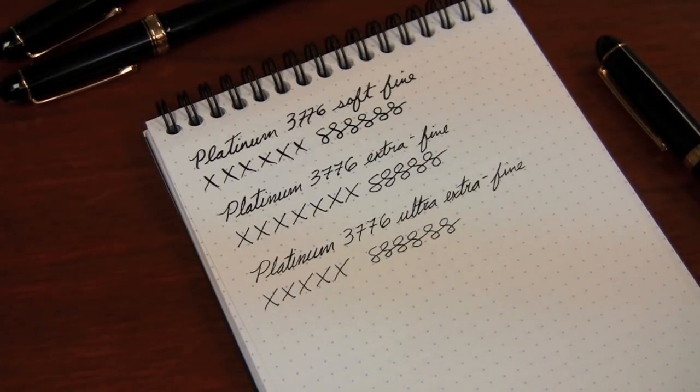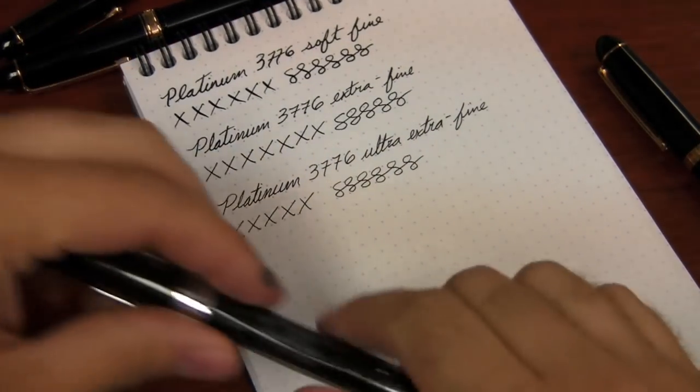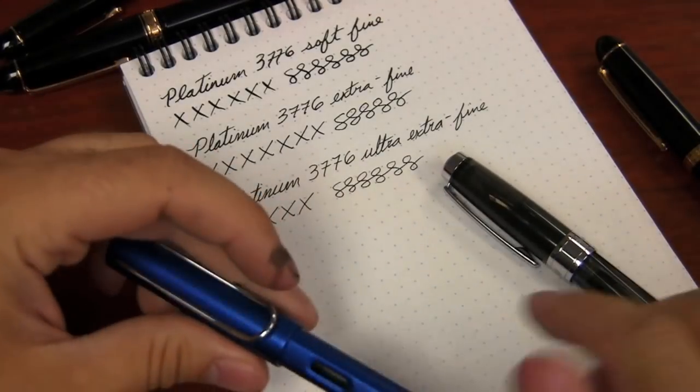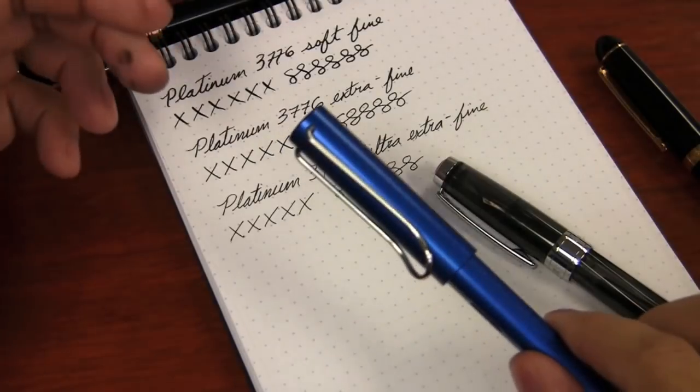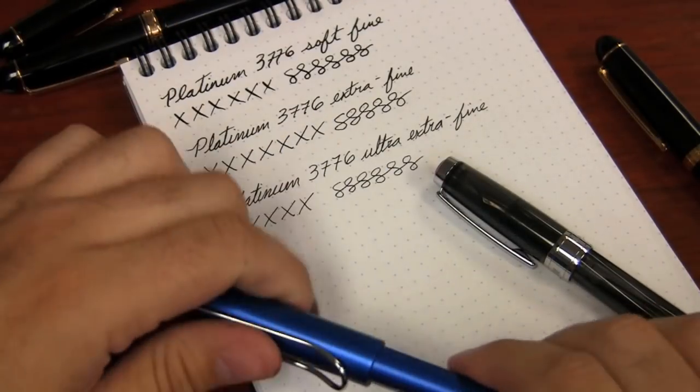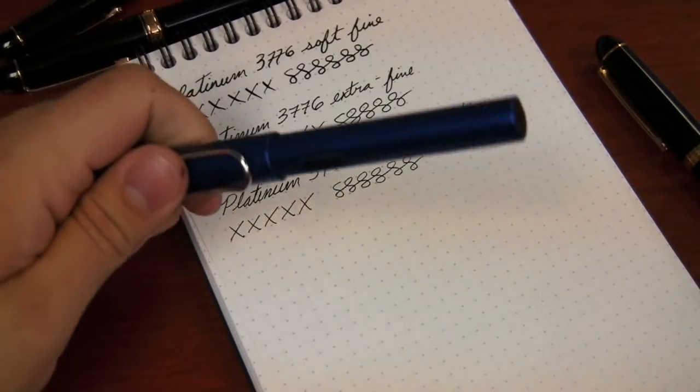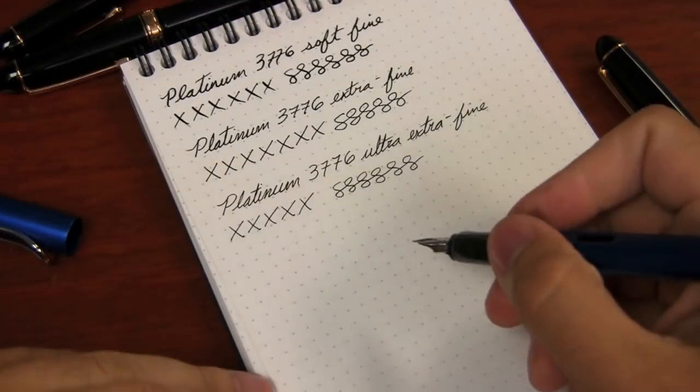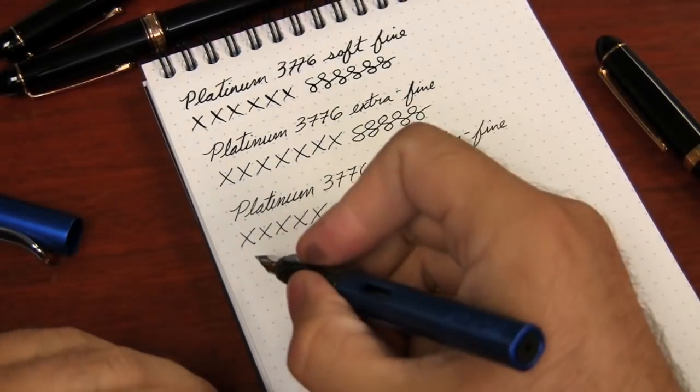To give you an idea of how these compare, I wanted to show you a Twisby extra fine, a Diamond 540 extra fine, and a Lamy steel extra fine nib as a comparison. Maybe to just kind of help give you a little bit of an idea. So here we go.